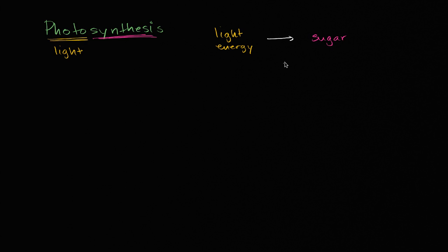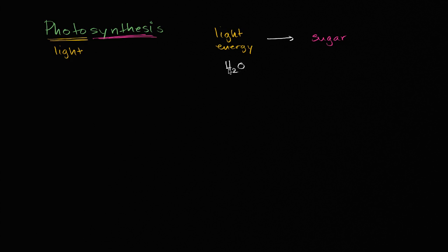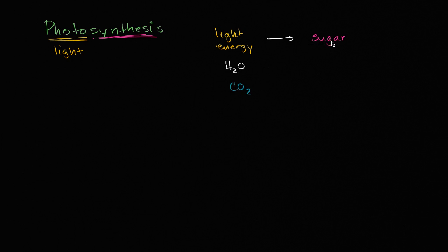Very broadly speaking, this is a very high level overview. But light energy isn't the only input here. We're also going to need some water. As we go into future videos, we'll see that water is actually a source of electrons to make use of that light energy. And we're also going to need some carbon dioxide — really as a source of carbons, because there's a lot of carbon in those sugars. We're essentially going to fix the carbon, taking it from carbon dioxide gas and incorporating it into organic molecules and eventually into sugar.